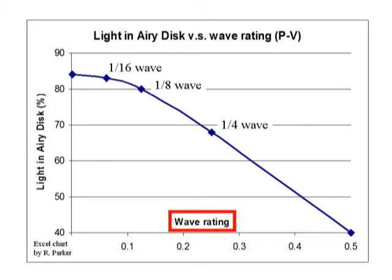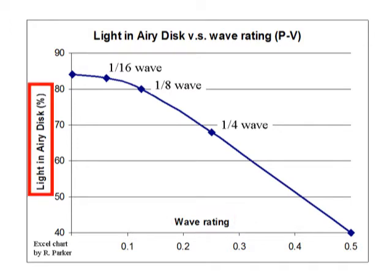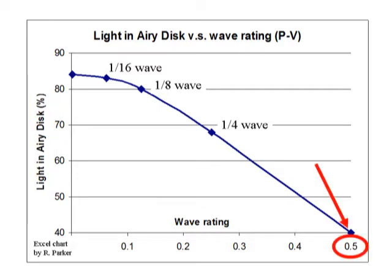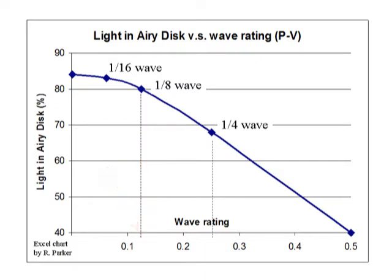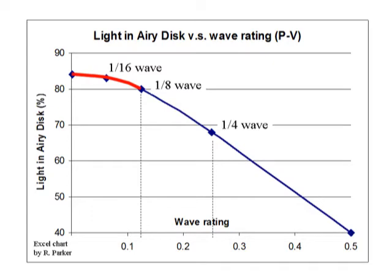A plot of wave rating versus light in the Airy disk — with smaller wave ratings toward zero and increasing Airy disk light going up — shows that the line between half-wave, quarter-wave, and eighth-wave is steep and fairly linear. But as soon as you get to an eighth of a wave, the curve bends over into the area of diminishing returns: you don't gain much for continued improvement beyond an eighth of a wave.